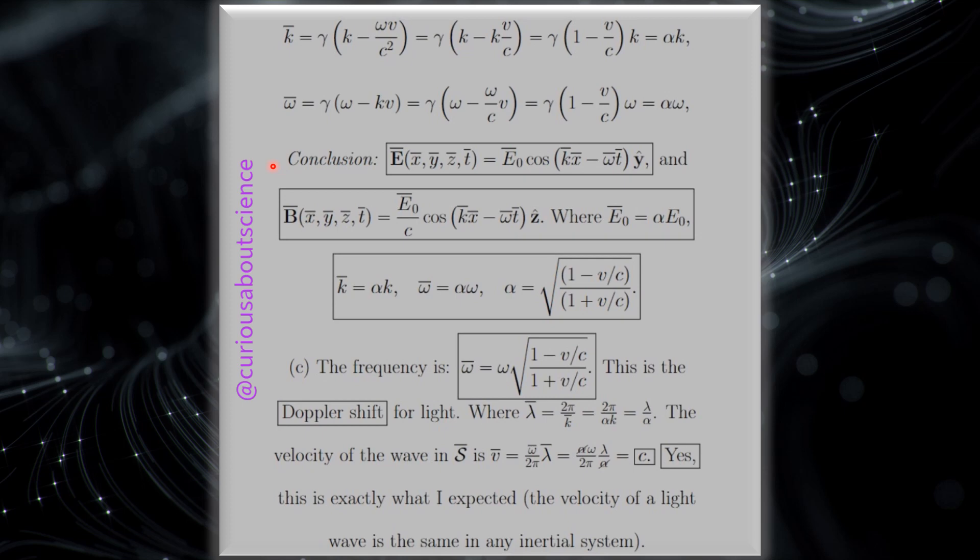Our conclusion is that the transformed field goes in the y direction only, and we have the barred coordinates. Same thing for the B, where E bar naught is equal to alpha E naught, because we have that alpha factor, but they follow the same mimicking form. That's freaking cool. We have k bar equal to alpha k, omega bar equal to alpha omega, and then we see what alpha is with the minus and plus. So now we're good to go.